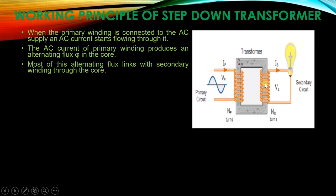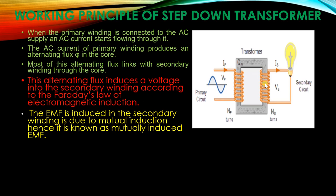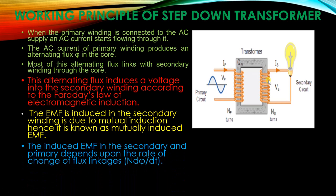This alternating flux induces a voltage in the secondary winding according to Faraday's law of electromagnetic induction. The EMF induced in the secondary winding is due to mutual inductance, and hence it is known as mutually induced EMF, denoted by E2. The induced EMF E1 and E2 on the primary and secondary sides depend upon the rate of change of flux — that is, dφ/dt.